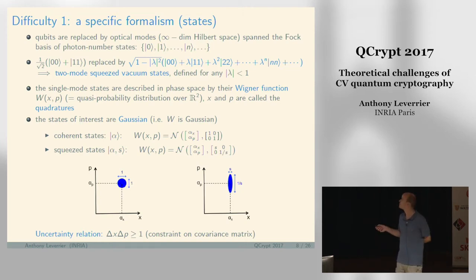What is a Wigner function? It's a quasi-probability distribution over R² if you have a single mode. The two coordinates of R², x and p, are called the quadratures of the field. This is the phase space.